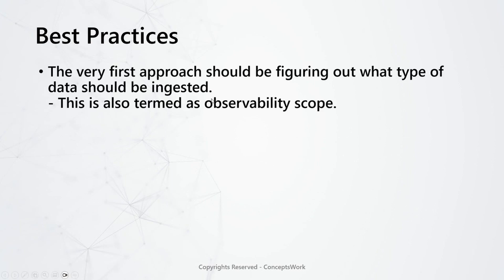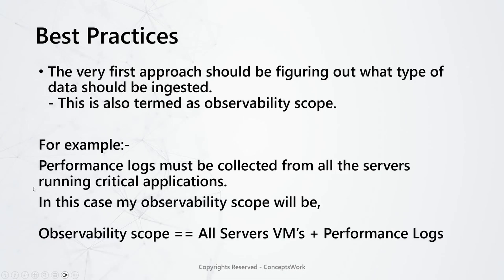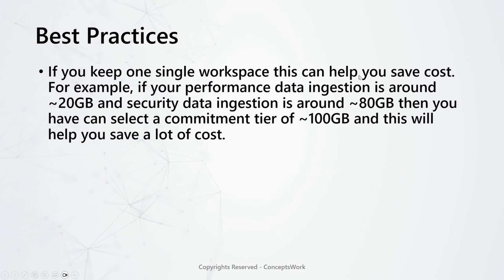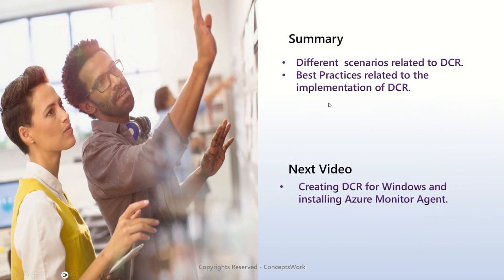The very first approach should always start by knowing what type of data you want ingested — this is also referred to as your observability scope. For example, if you want to capture performance logs from all servers running critical applications, your observability scope will be all server VMs plus performance logs. Keeping a single workspace can also save a lot of cost: if performance monitoring data ingestion is around 20 GB and security data ingestion is around 80 GB, choosing a commitment tier of 100 GB instead of pay-as-you-go can save significant cost.